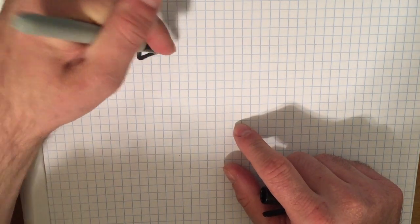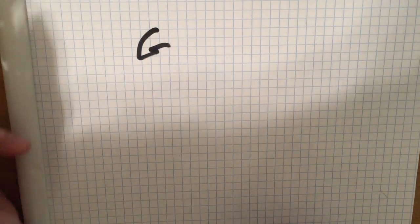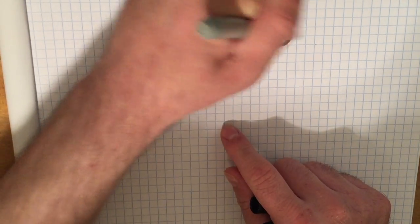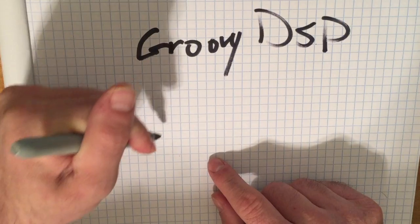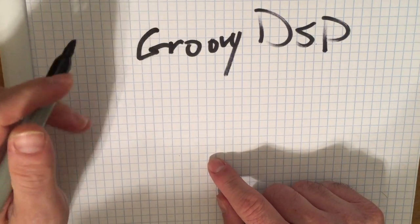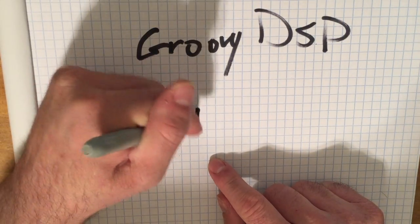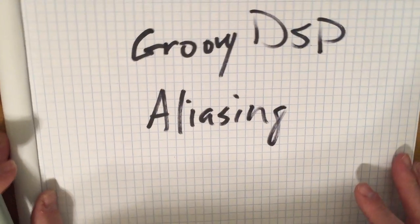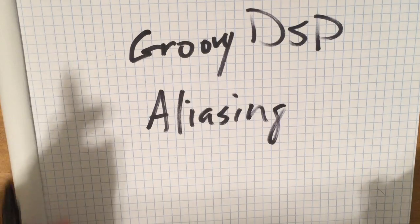Okay, so welcome to the second major lecture on Groovy DSP. We're going to talk today about everyone's favorite subject, aliasing, because it's going to make your life way more complicated than you'd like it to be.